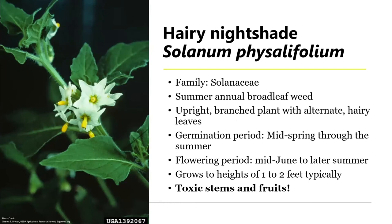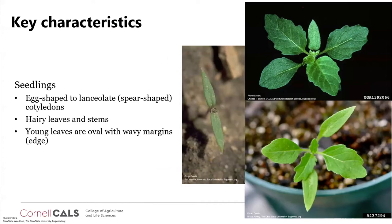Hairy nightshade, Solanum physalifolium, is in the tomato family, just like peppers and tomatoes. It is another summer annual broadleaf weed — upright and branched, with alternate hairy leaves with wavy to toothed margins. It germinates from mid-spring through summer and typically flowers in mid-June through later in the summer. It grows about one to two feet in height, but can reach three feet. Importantly, the stems and fruit of hairy nightshade are toxic — do not consume it, as it is toxic to animals as well. The flowers look very similar to tomato flowers.